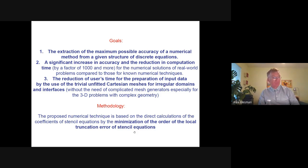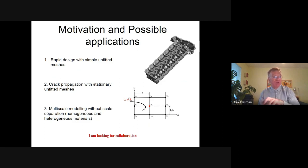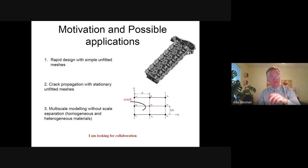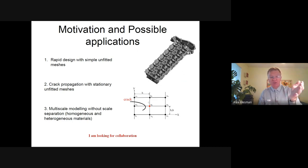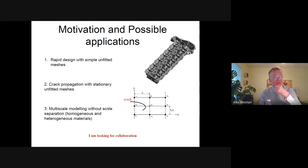Motivation and possible applications of this approach include: rapid design with simple unfitted meshes — for example, if we have a very complex geometry such as an engine, the use of unfitted Cartesian meshes significantly simplifies the solution; crack propagation, where we use stationary unfitted meshes, so meshes are totally independent of geometry and can be used for propagating or evolving geometry; and also multiscale modeling without scale separation for homogeneous and heterogeneous materials, because the technique is very accurate.